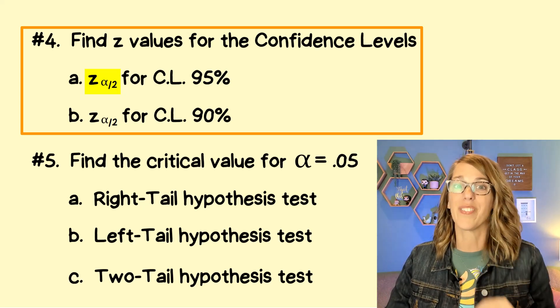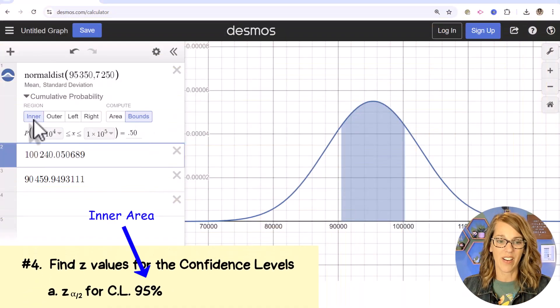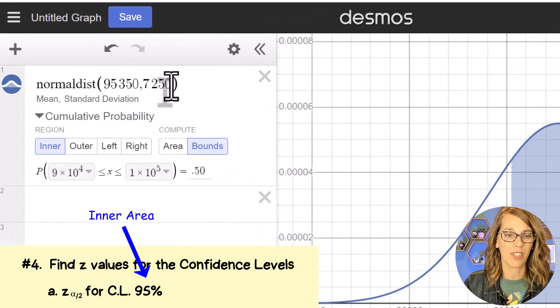Well, alpha is the outer area. And we're going to split that into two. You don't need to worry about that. Just know that we want those z scores. So that means that I want to find the bounds for the inner area. Let me x off of what we had. I want to go back to my standard normal distribution. And to do that,